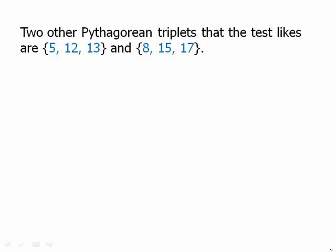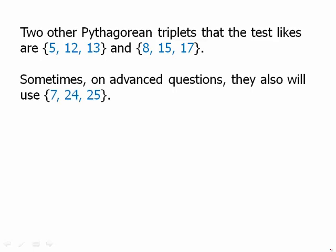Two other Pythagorean triplets that the test likes are 5-12-13 and 8-15-17. Those are good ones to memorize. Sometimes in advanced questions they will also use 7-24-25. That one is rare, but if you really want to be safe, you should memorize that one also.